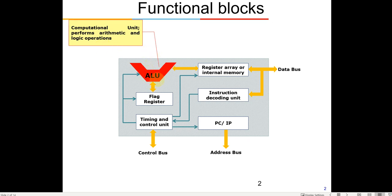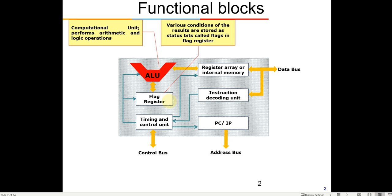This is the ALU, which is the heart of the system, and then you have a flag register. Whenever an arithmetic logic operation is done, the flag register — which is a 16-bit register — gets updated, and each bit corresponds to one particular condition. If there is a carry, one of the bits will be set to 1; if there is an auxiliary carry, something will be set to 1. These status values are recorded in the flag register.